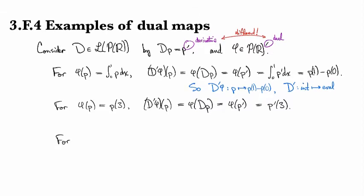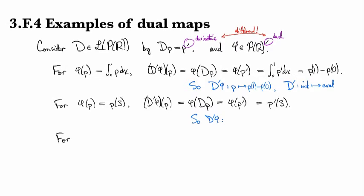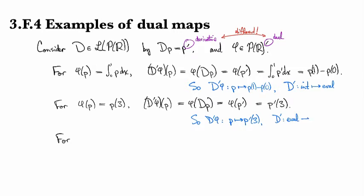So what we see for the first one is that D prime of phi takes p to p(1) minus p(0). So D prime took some integration functional to an evaluation functional. And then in the second one, what did we see? We saw that D prime of phi is something that takes p to p prime of 3, which means that D prime took evaluation to evaluate a derivative.